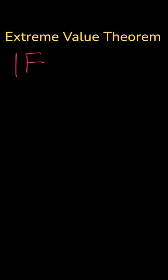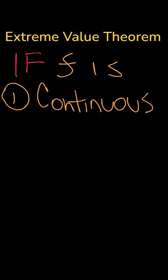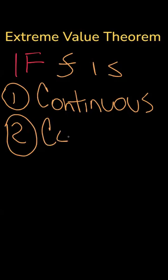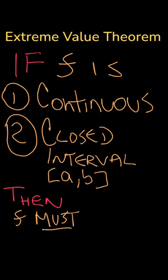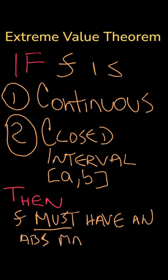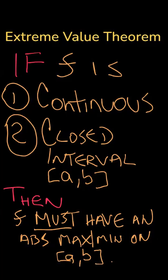Here's what you need to know about the extreme value theorem. There are two conditions to check. One, f must be continuous, and two, f must be on a closed interval a to b. Then, f must have an absolute max and an absolute min on the closed interval a to b.